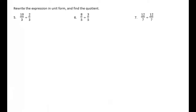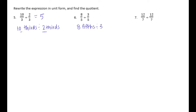Rewrite the expression in unit form and find the quotient. Number 5: 10 thirds divided by 2 thirds. We have 10 thirds divided by 2 thirds, so 10 divided by 2 equals 5. Number 6: 8 fifths divided by 3 fifths. We have 8 divided by 3, and since a division problem is a fraction, we get 8 thirds.